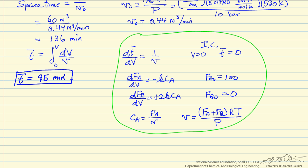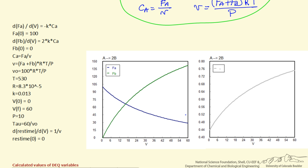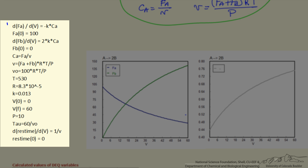Notice this is significantly less than space time because of this increase in the volumetric flow rate. What I'm showing here is the Polymath program, where we have the differential equations for the mass balance, differential equations for the residence time, the starting volume, and we integrate to the final volume.